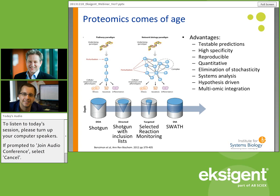Shotgun mass spectrometry can tend to be stochastic, where you don't get reproducible identifications occurring. The next step would be to take the mass spectrometer and start to do more of a targeted approach by doing inclusion lists. You can take the molecular masses of the peptides you want and direct the mass spectrometer to pick those out preferentially within the chromatographic run. This gives you a little bit deeper into the proteome, though you lose a little bit in breadth of identification.